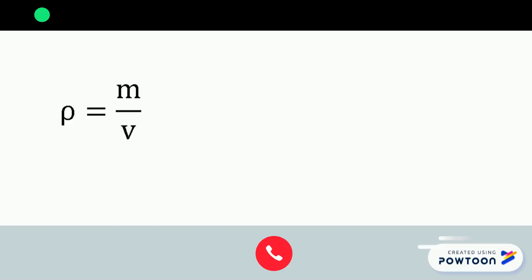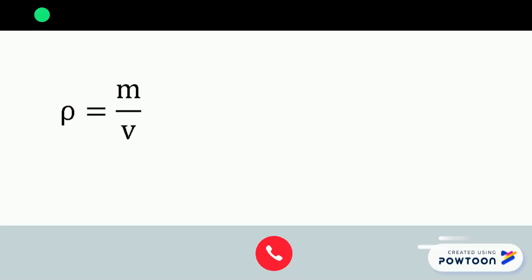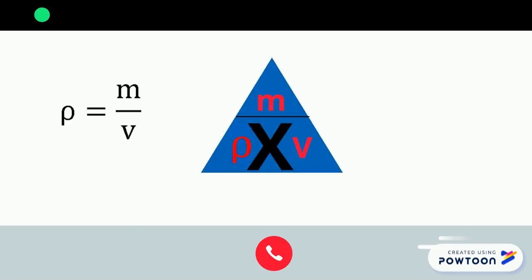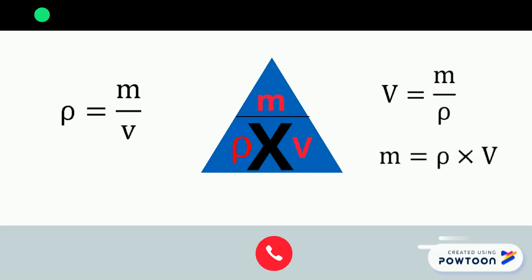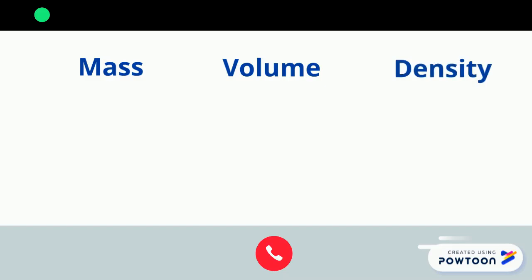In this relation, we have three quantities: the density rho, the mass m, and the volume v. Knowing any two of them, you can calculate the third quantity using the following formulas: rho equals m over v; v equals m over rho; and m equals rho times v.